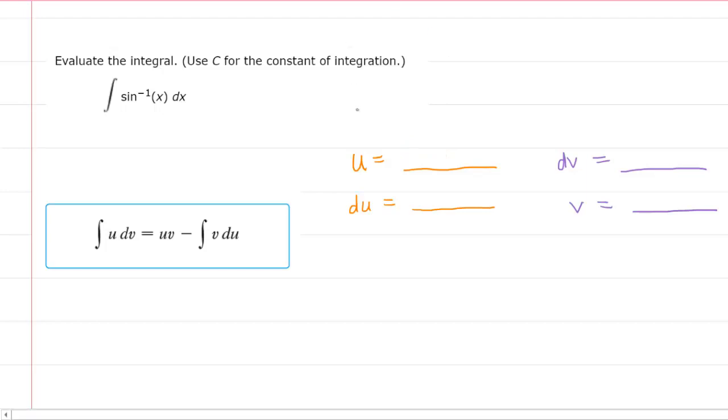So the first thing we need to do is establish what our u is going to equal. Oftentimes in integration by parts problems, there will be two functions that are being multiplied together. So you'd have to select which of those two functions would be your u. In this particular case, there's only one function. There's the inverse sine of x. And in those cases, when you're using integration by parts with a single function, all of the examples would involve letting u equal that function. So we're going to let u equal the inverse sine of x.